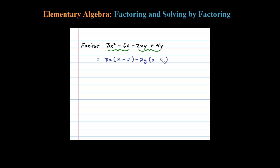Now double check: negative 2y times X is negative 2xy, negative 2y times negative 2 is positive 4. Okay, now I'm going to treat this as a binomial, something some term minus another term.